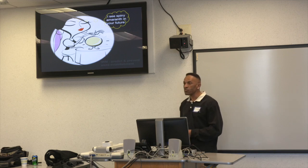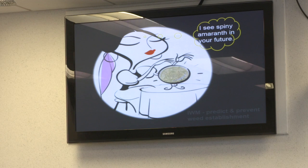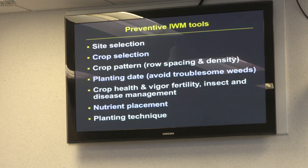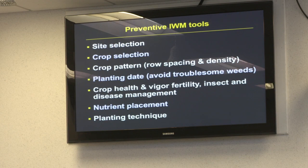Integrated weed management involves predicting and preventing weed establishment. With site selection, for instance, vegetable crops tend not to compete well with weeds. The rule of thumb is that unless you've had two consecutive seasons of good weed control in a field, don't plant vegetables there. Similarly, if you have a perennial weed problem, don't plant vegetables until you've cleaned up that problem.